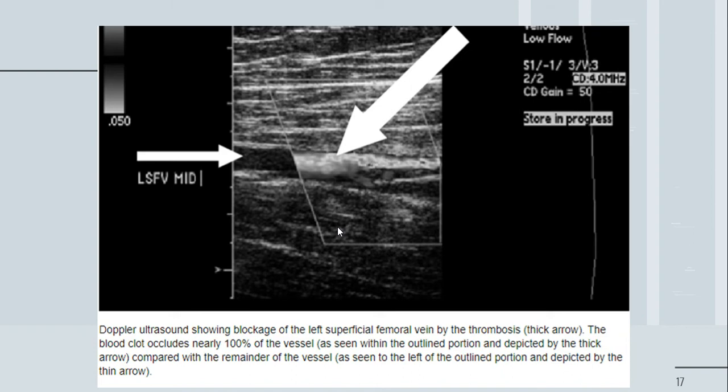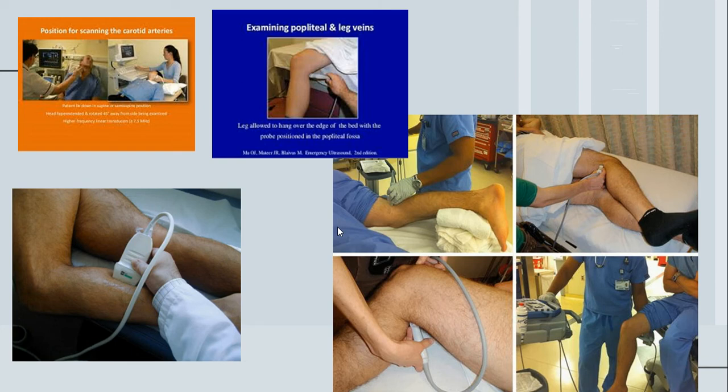The probe positions for vascular ultrasound change considerably depending on which vessels are being examined. First is the position for scanning the carotid arteries, then we move to the specific positions for the popliteal and leg veins. Here are the different positions for the popliteal vein, and over here is the position for the peroneal vein.